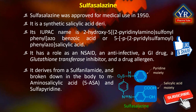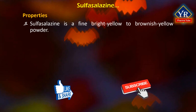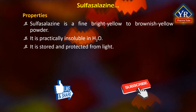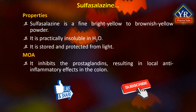It is broken down in the body to 5-aminosalicylic acid, abbreviated 5-ASA, and sulfapyridine. Sulfasalazine is a fine bright yellow to brownish yellow powder. It is practically insoluble in water and is stored protected from light. Its mechanism of action is unclear. One proposed mechanism is the inhibition of prostaglandins resulting in local anti-inflammatory effects in the colon.